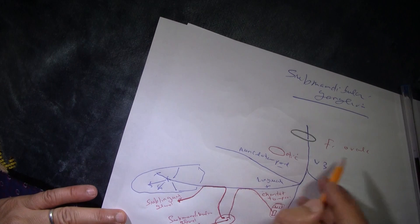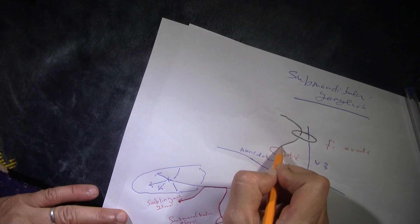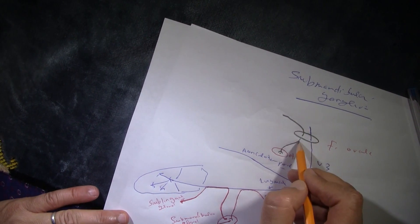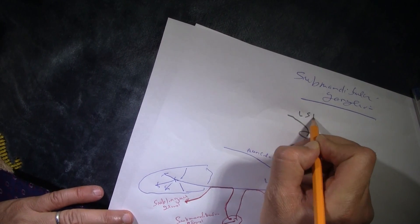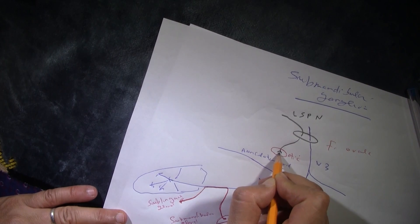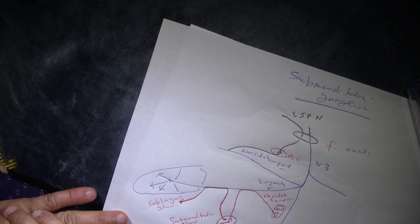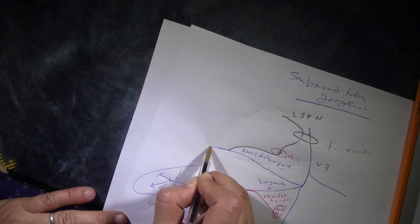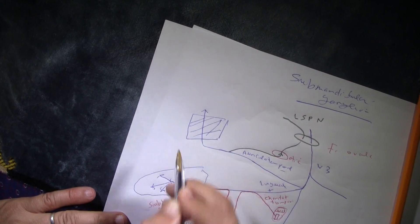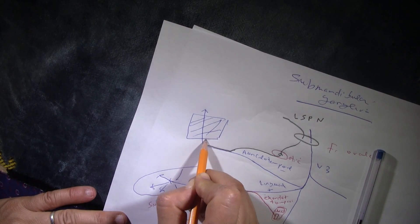For a quick revision of the otic ganglion: it receives preganglionic fibers through the lesser superficial petrosal nerve, which comes through foramen ovale. The preganglionic fibers stop at the otic ganglion, and from there the postganglionic fibers join the auriculotemporal nerve. The auriculotemporal nerve travels through the parotid gland, and the postganglionic fibers supply the parotid gland.